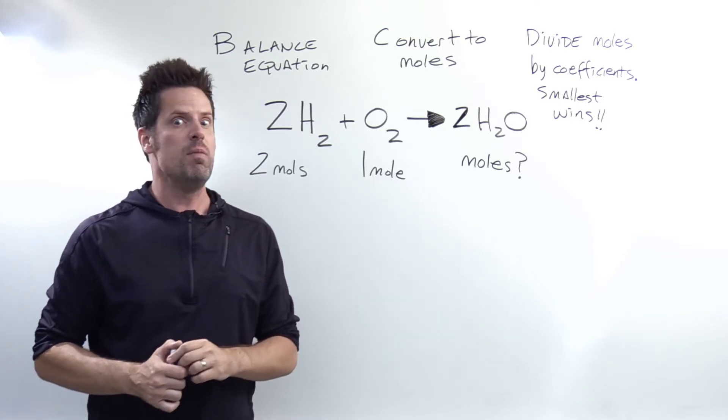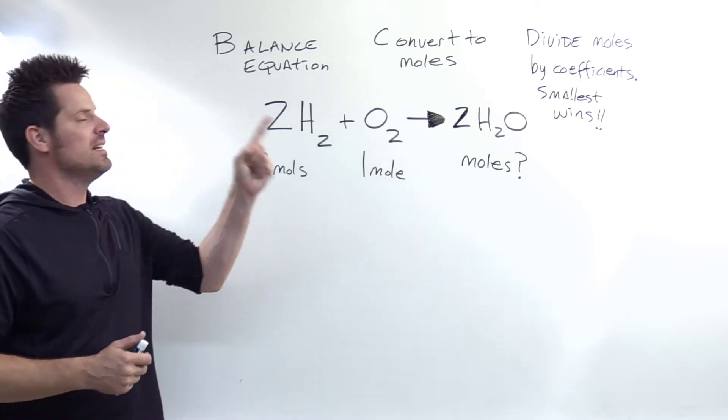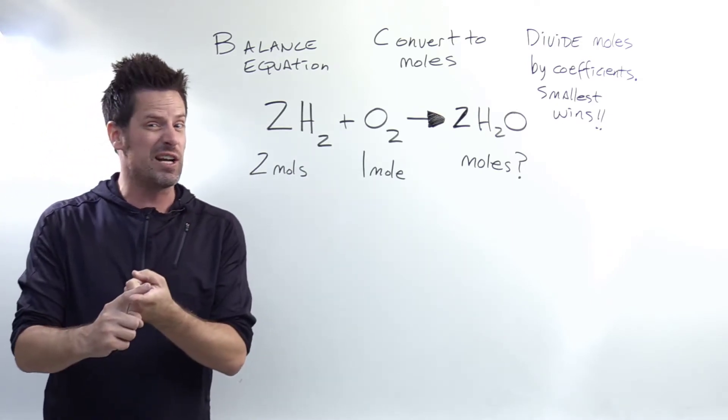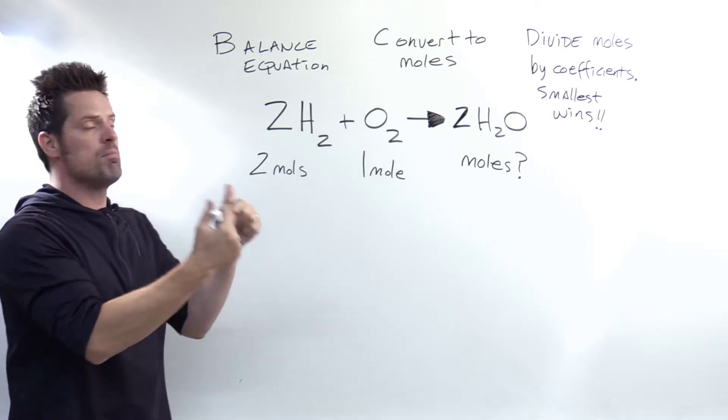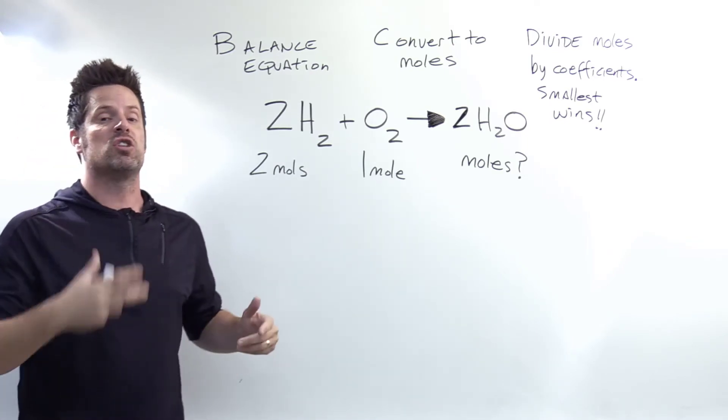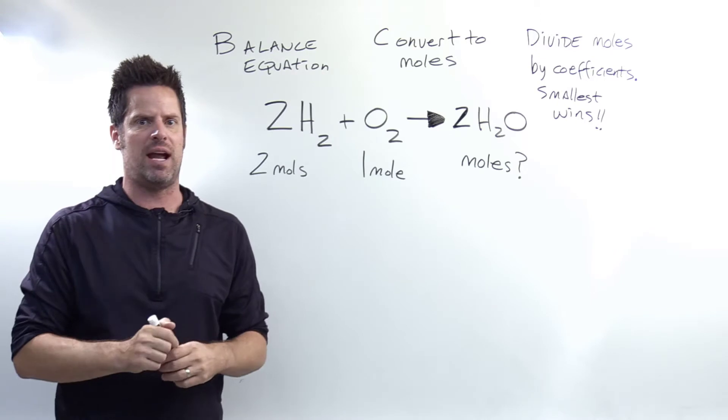For doing that, I like to use this mnemonic that I invented: BCD, where B stands for balance the equation, C for convert to moles, and D, which is divide your mole amounts by the corresponding coefficients. The smallest answer ends up being the limiting reactant.